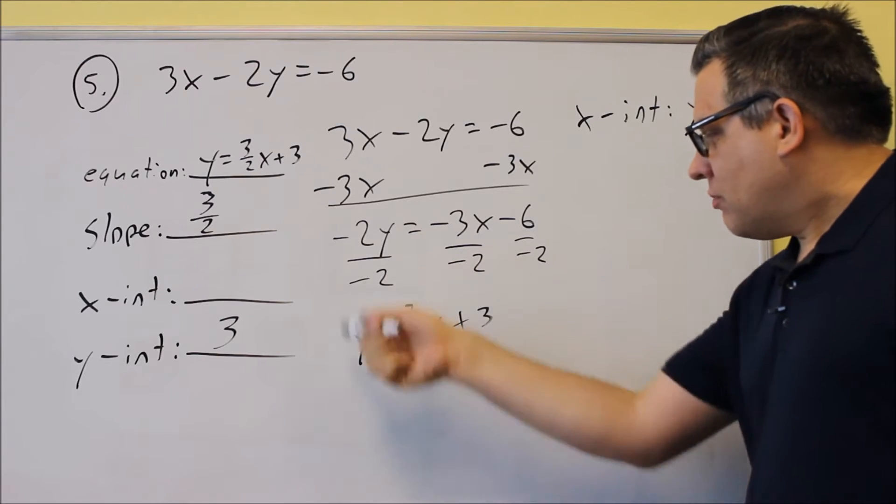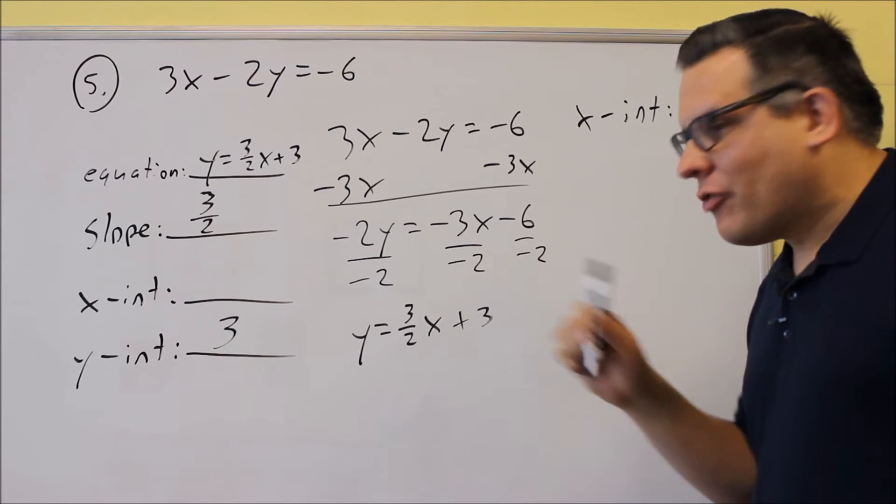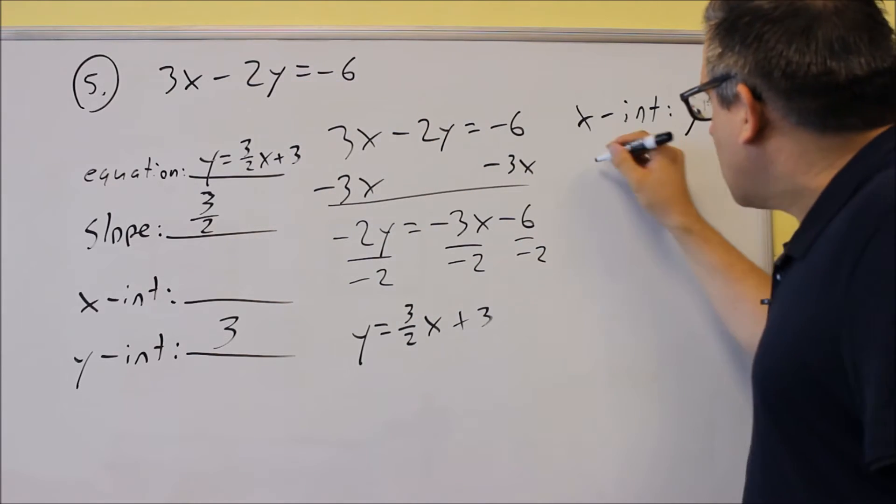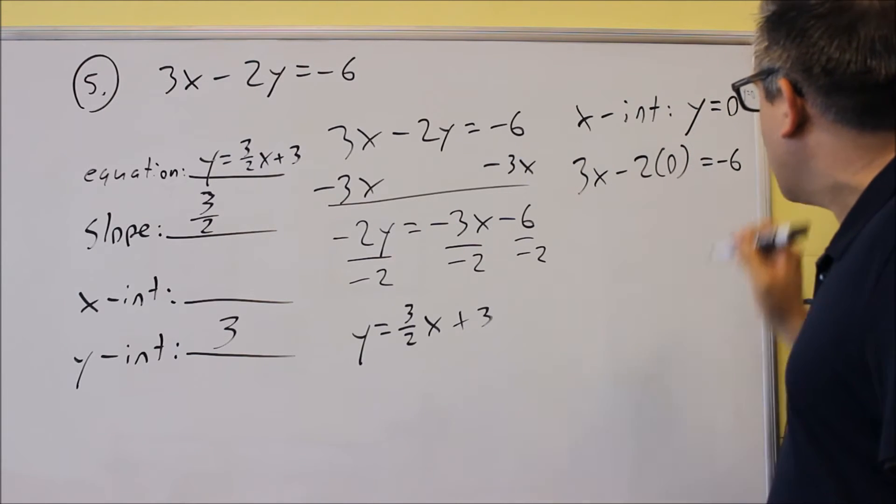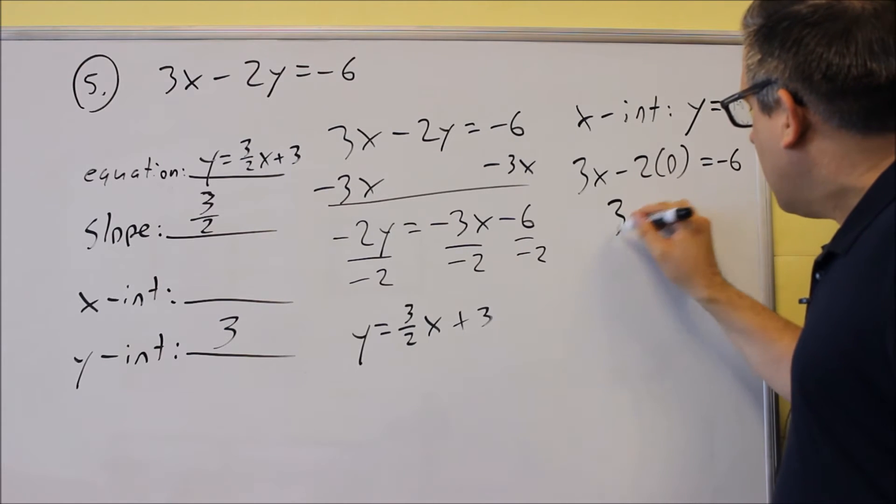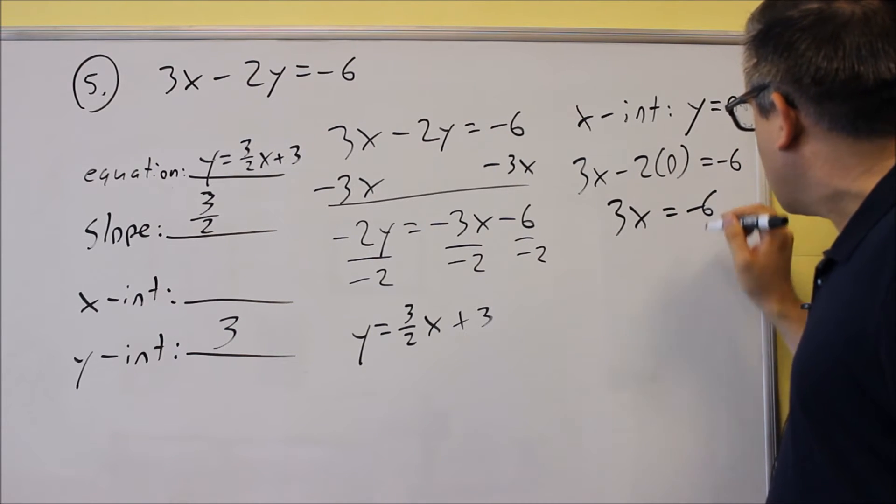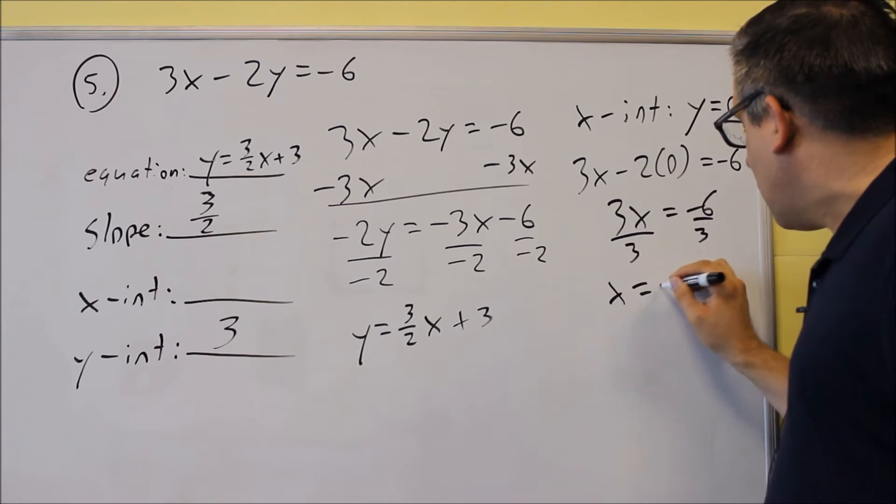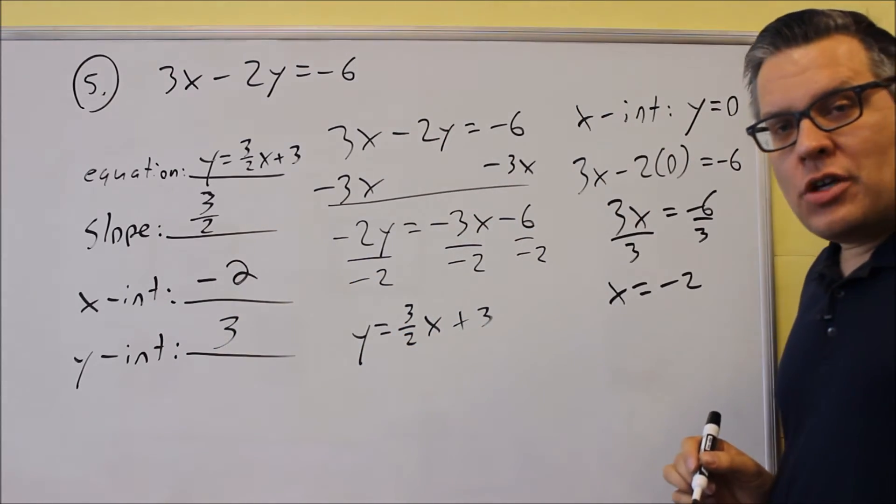Now, I could use this equation right here and put a 0 in for y there, but with the fraction, I think it's going to be easier if we use the original one in this case. So I have 3x minus 2 times 0 equals negative 6. And then 2 times 0 is 0. So we get 3x equals negative 6. Divide both sides by 3. And we get x is equal to negative 2. So now we know what the x-intercept is going to be.